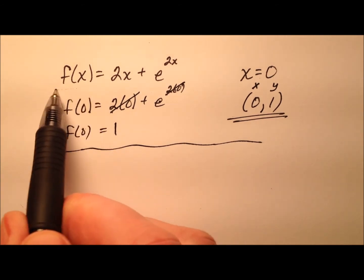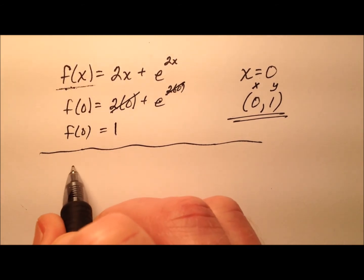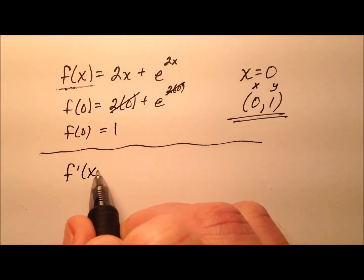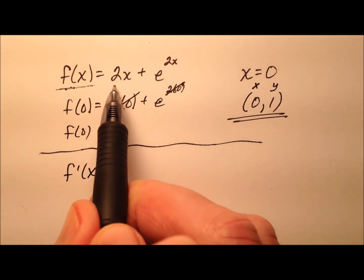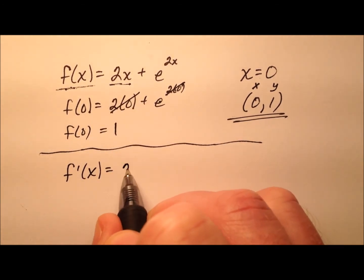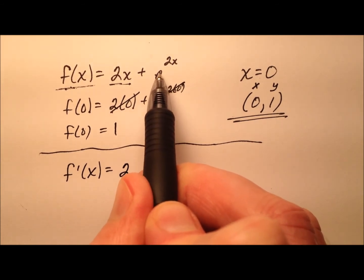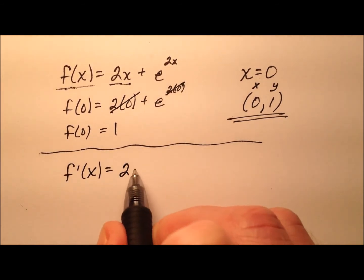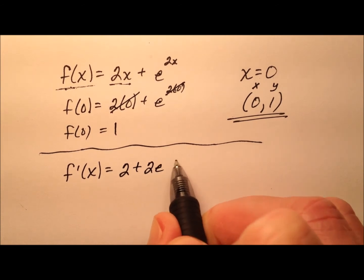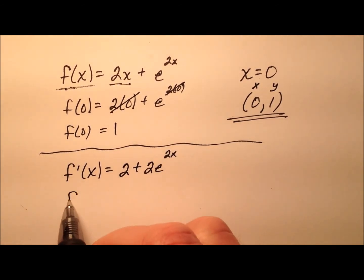To find the slope, I need to find the derivative of this function. f'(x) equals 2, the derivative of 2x, plus 2e^(2x), the derivative of e^(2x) using the chain rule.